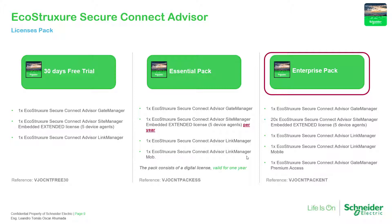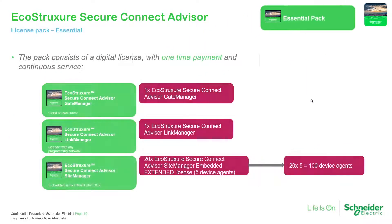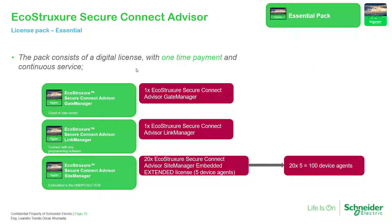Comparing the essential and the enterprise: the essential is paid per year, and year by year you will have an additional extended license. The enterprise is a one-time payment, and you will have the gate manager, the link manager, and for the site manager, 20 extended licenses, each covering up to five device agents.